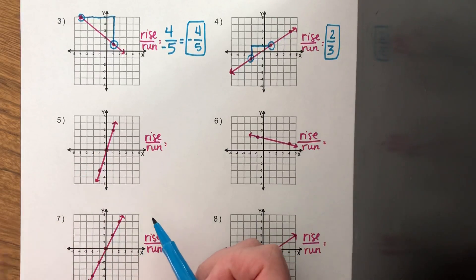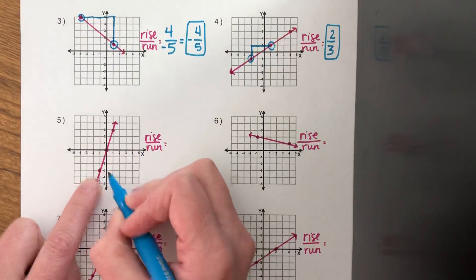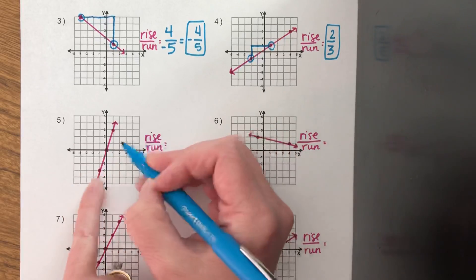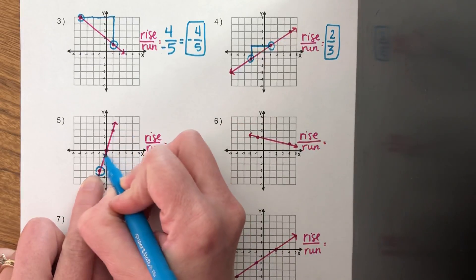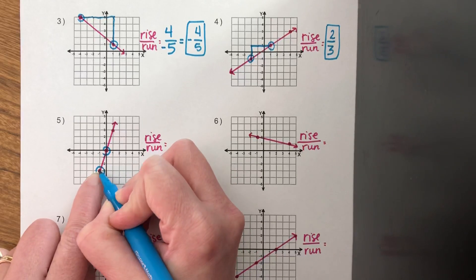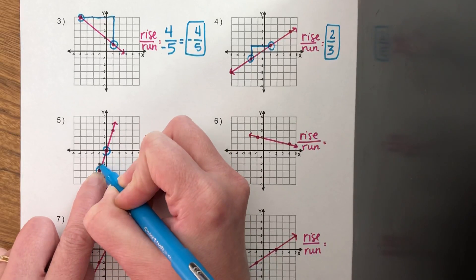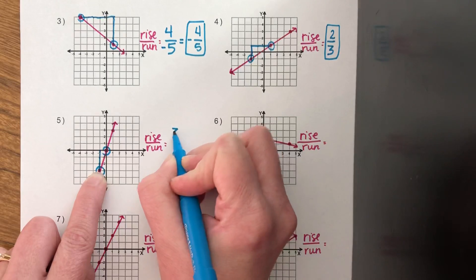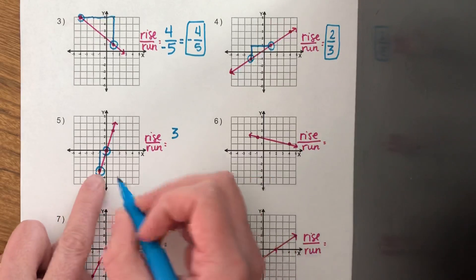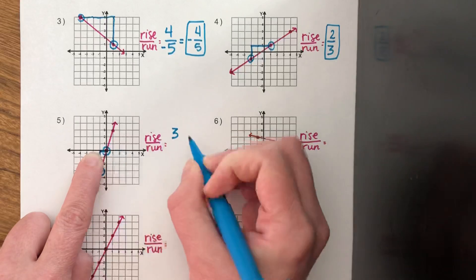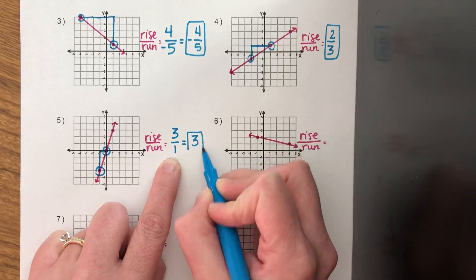Number five. Try to decide: is it going to be positive or negative? Count between two of the closest points. If I accidentally miss a point and pick two that aren't closest, I'll just have to reduce at the end — not a big deal. I always start at the bottom. My rise is one, two, three — rise is three. Never start counting with where you are; your first movement is the first count. I went over one to the right, which is positive, so my slope is three over one, or just three.